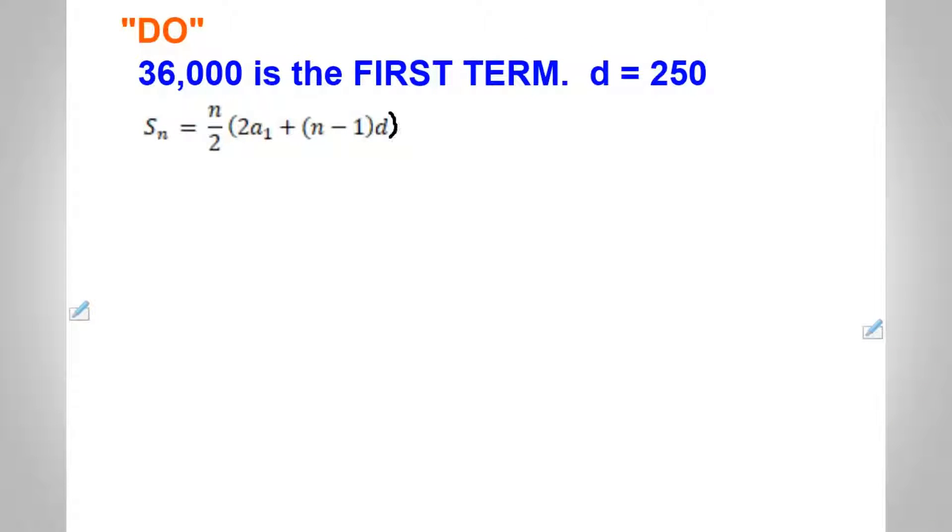Let's do it. In here, 36,000 is the first term, the common difference is 250. We will now look for the sum of the first 8 terms. To do that, we need a sub 1, which is equal to 36,000, and n equals 8. We can now substitute to the given formula: S of 8 is equal to 8 over 2 times 2 times the first term, which is 36,000, plus the quantity n, which is 8 minus 1, times the common difference, which is 250.